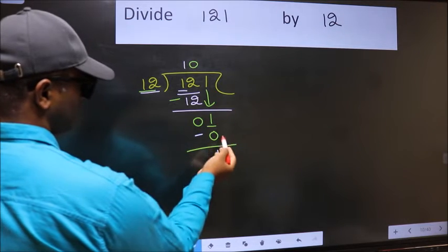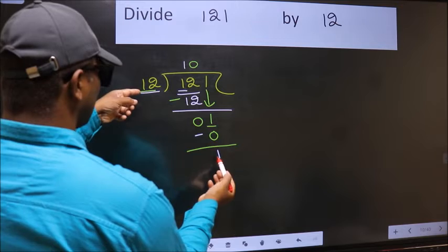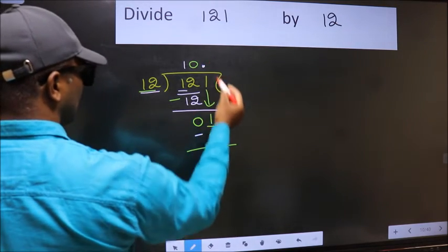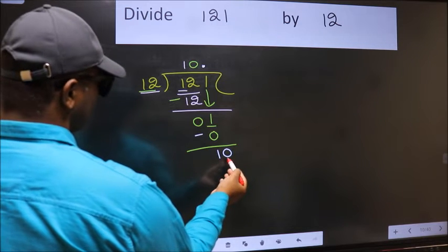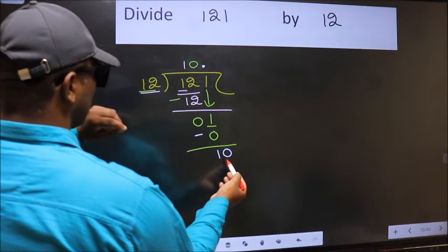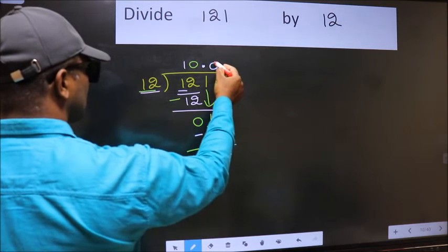Over here we did not bring any number down, and 1 is smaller than 12, so now we can put dot and take 0. So 10. 10 is still smaller than 12. We already have decimal, so you put 0 here to get 0 here.